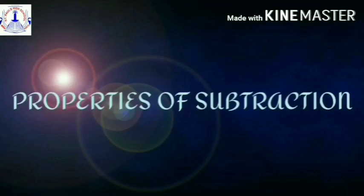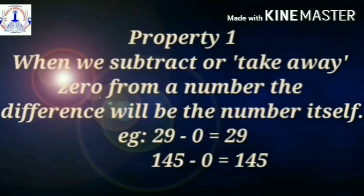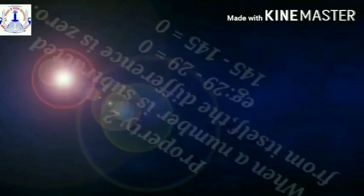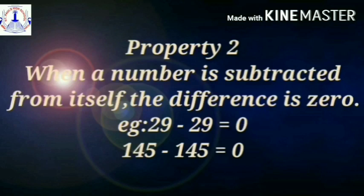Now, students, let's get started with the properties of subtraction. Property 1: When we subtract or take away 0 from a number, the difference will be the number itself. For example, if you subtract 0 from 29, your answer will be the number itself, i.e. 29. 145 minus 0 is equal to 145. Property 2: When a number is subtracted from itself, the difference is 0. For example, if you subtract 29 from 29, your answer will be 0. 145 minus 145 is equal to 0.